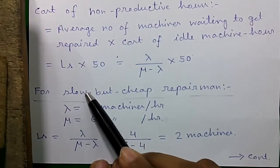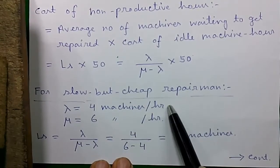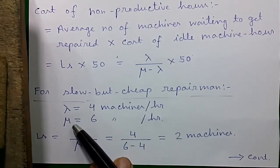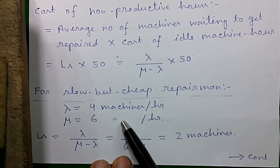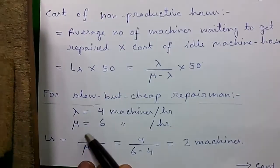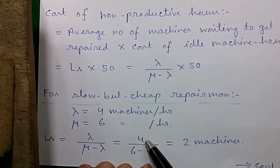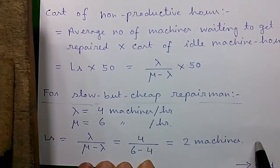So now calculating for slow but cheap repairmen, lambda equals to 4 machines per hour which is constant for both the repairmen. And mu is the repairing capacity of slow workmen, so it's 6 machines per hour. So Ls equals to lambda divided by mu minus lambda that's equals to 4 divided by 6 minus 4 equals to 2 machines.